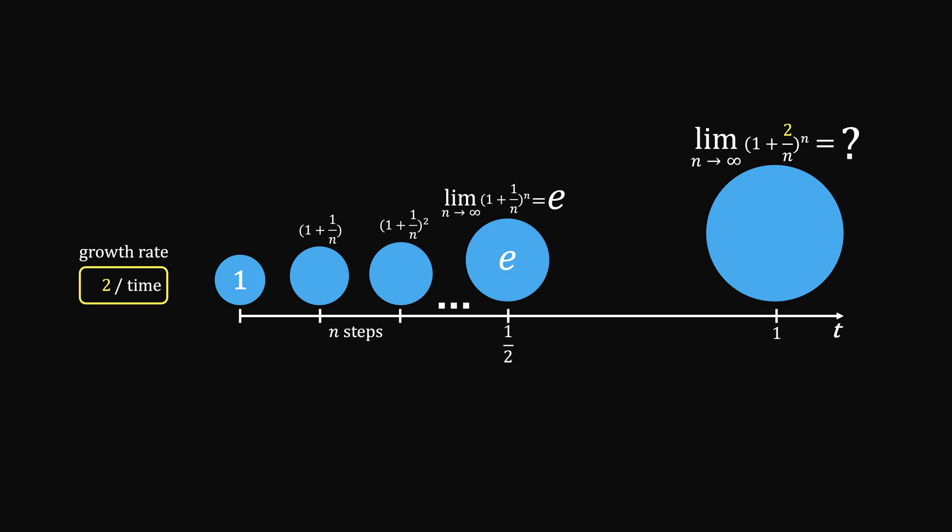So that means, when we double the rate of growth, we only need half the time to reach e unit from 1 unit. Hence, given another half the unit time, it will multiply by another e units.